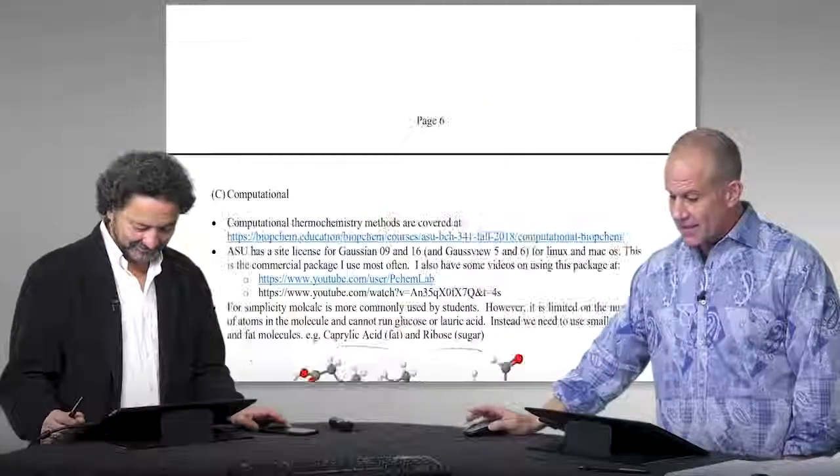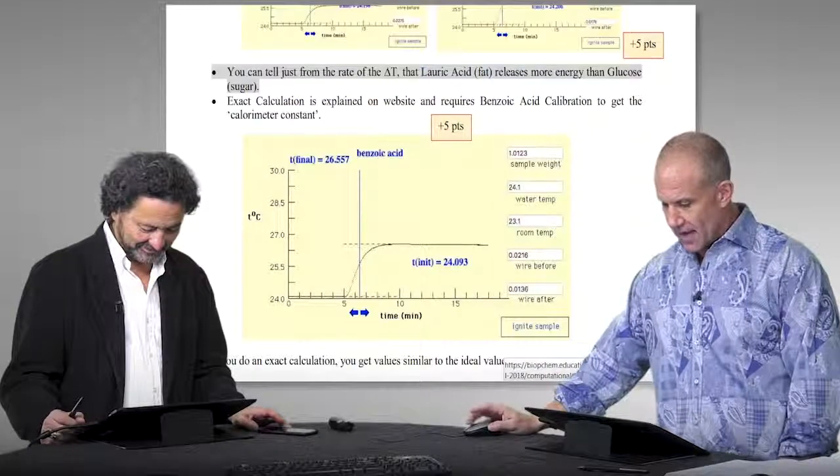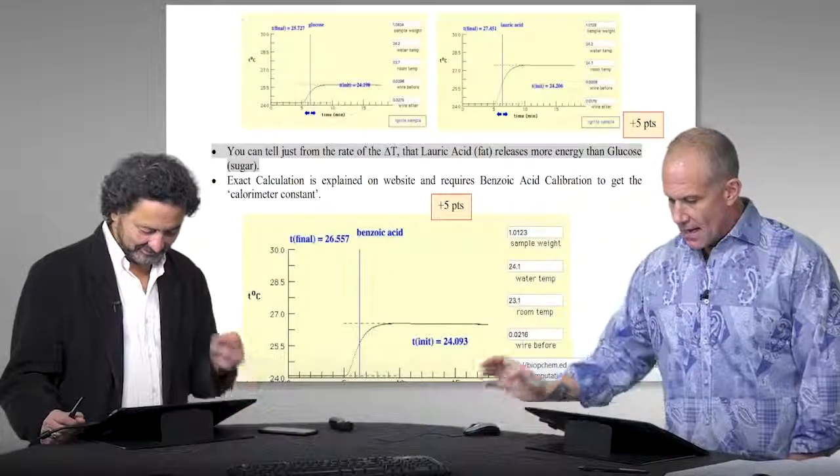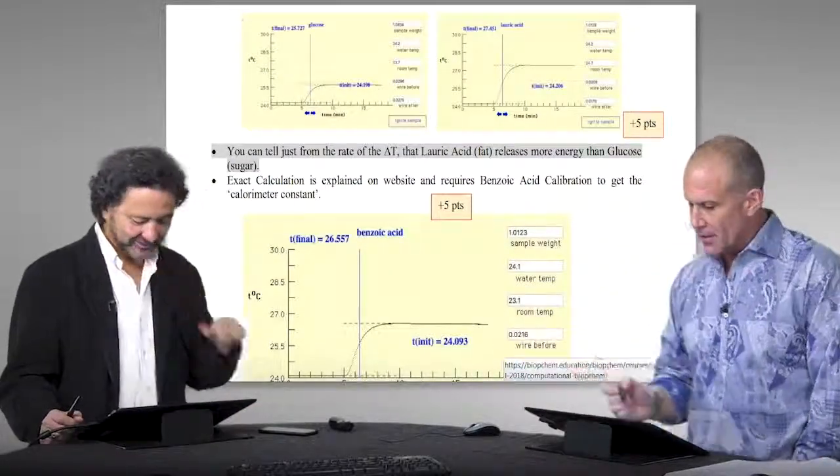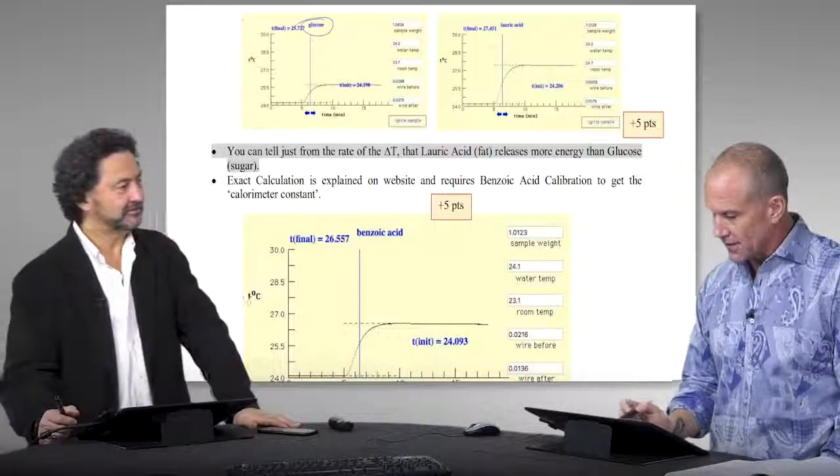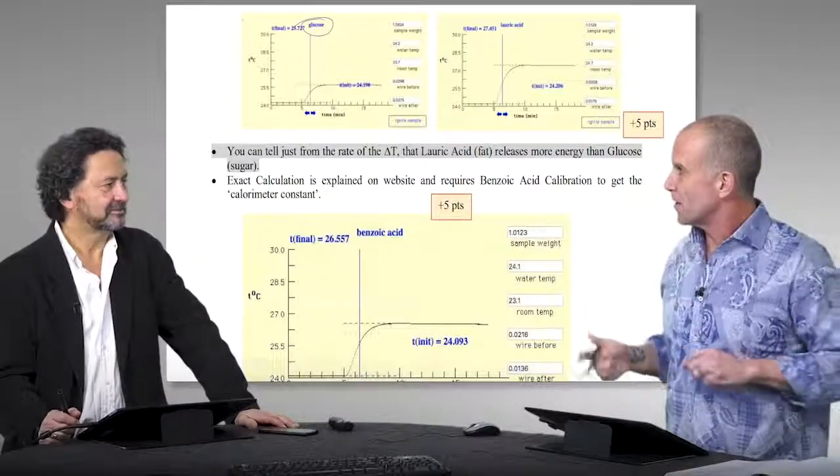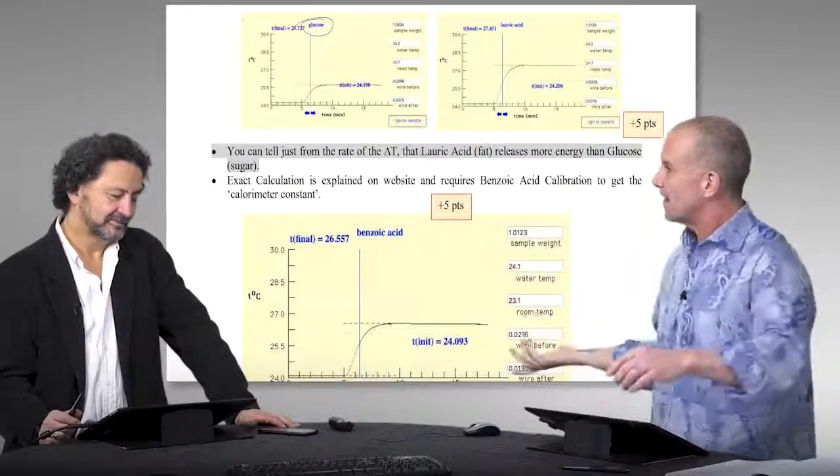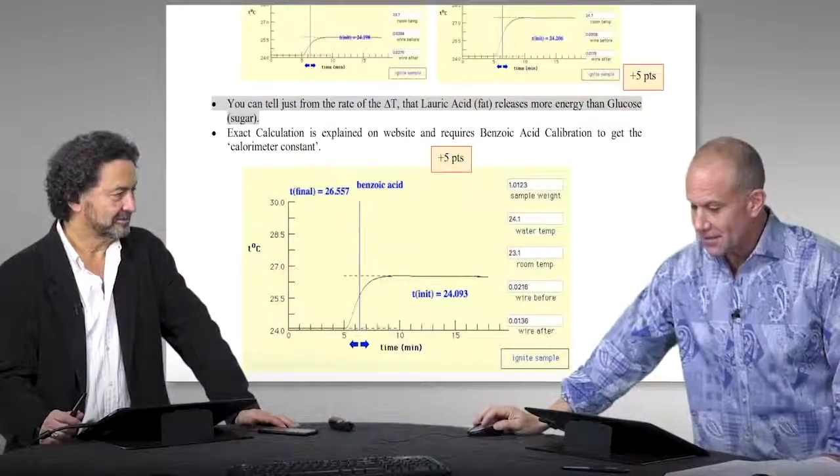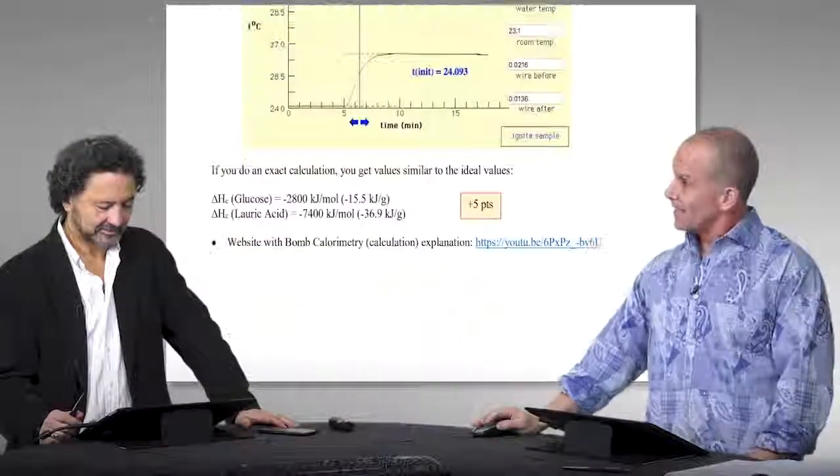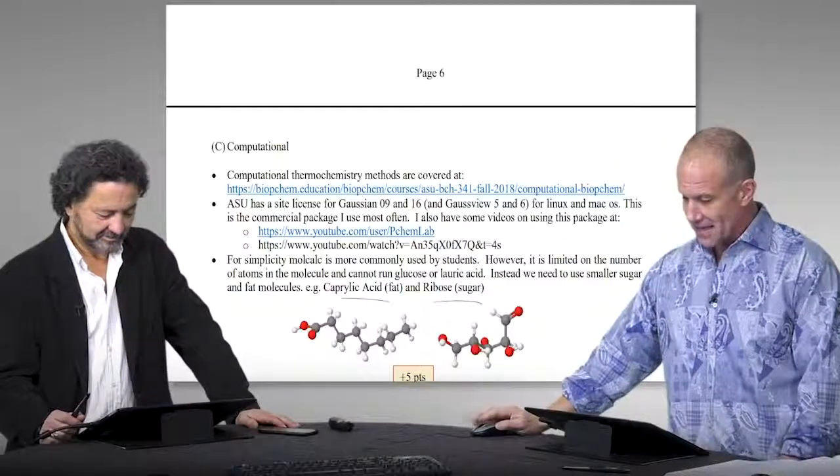In fact, this is very common in the undergrad level that not only do they do a few bomb calorimetry of things like glucose and standards. Oftentimes you'll take a food, take Cheerios and put them in your bomb calorimeter. How close do you get? This is often what real food science does to calculate calories and stuff.